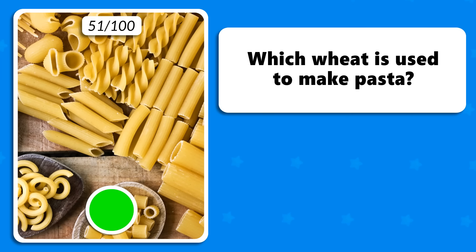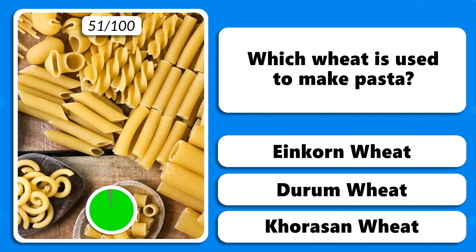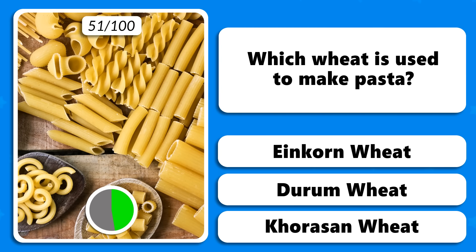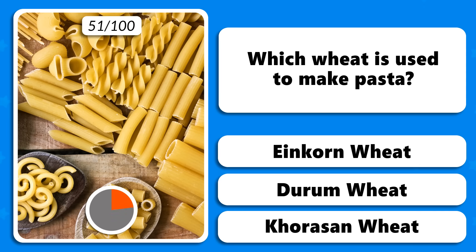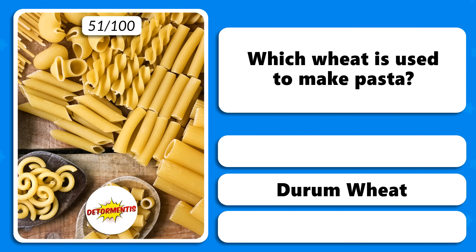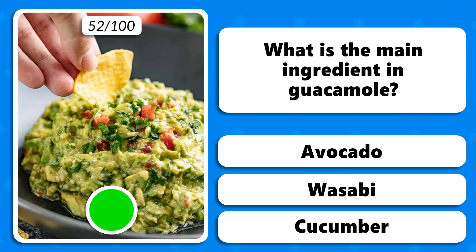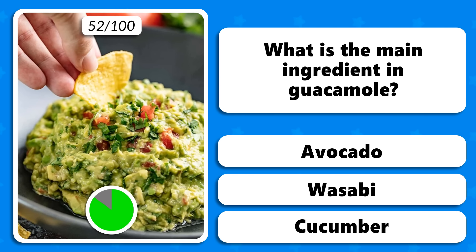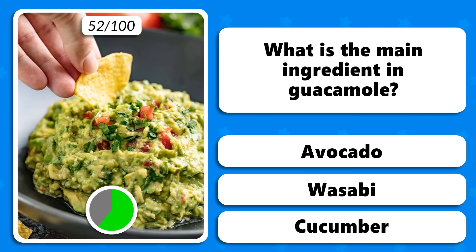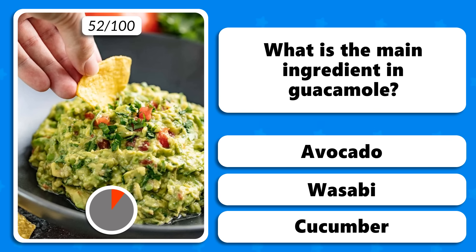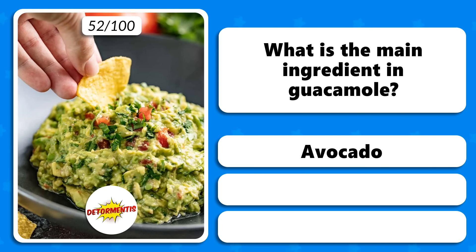Which wheat is used to make pasta — einkorn, durum or khorasan wheat? The answer is durum wheat. What is the main ingredient in guacamole — avocado, wasabi or cucumber? It is avocado.